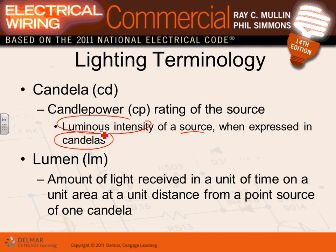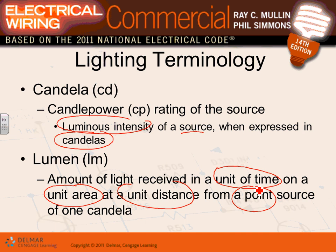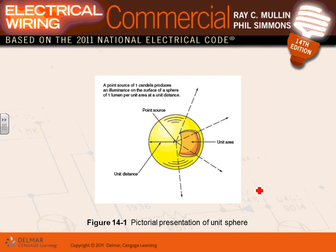The candela is defined as the amount of light received on a unit of area at a unit of distance from a point source in a unit of time. Here's a point of light — a point light source. Move a foot away from it — that's a unit of distance. A square foot of area — that's a unit of area. For one second — that's a unit of time. They define it as a candela, and they use a sphere to describe this concept.